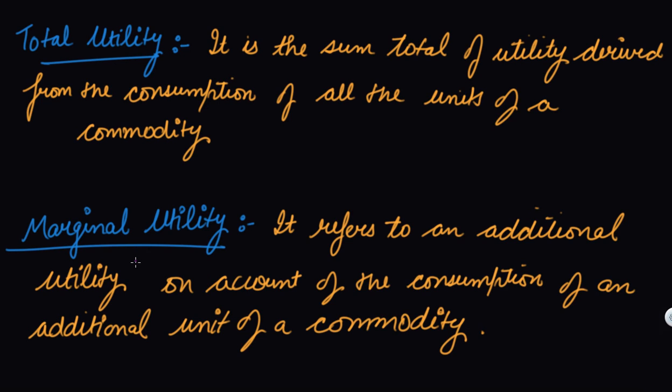Let's say you eat a pizza — one pizza gives you a satisfaction of 100 utils. You eat two pizzas, you get the satisfaction of 190 utils. So by consuming one additional pizza, you get an additional satisfaction of 90 utils. Marginal utility refers to the additional utility on account of the consumption of an additional unit of a commodity.